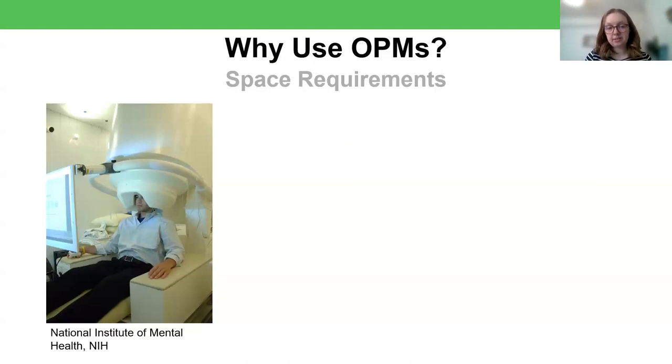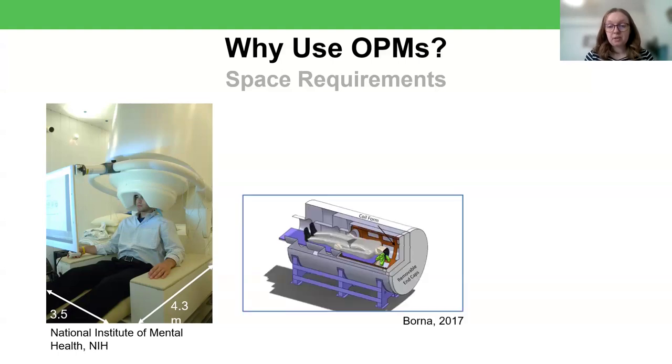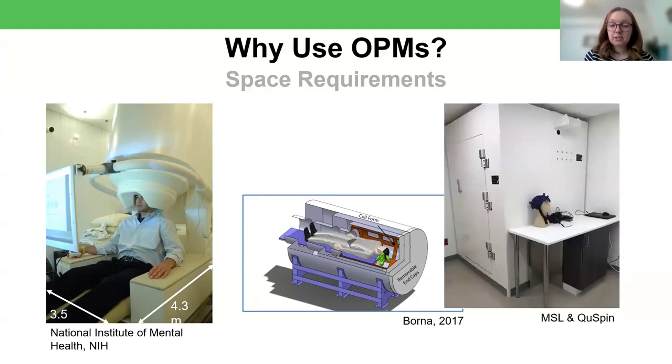Additionally, you might choose to use OPMs because of space requirements. So this helium dewar takes up quite a lot of room. A cryogenic MEG room can be just over three meters by four meters in footprint. Alternatively though, because the OPMs are very small and can be placed on the head, you can imagine a system that looks more like an MRI scanner that a person lies down in and takes up much less room. Alternatively, you can build a similar looking magnetically shielded room to a cryogenic system, but one that's much smaller in space. So this one takes up only 1.3 by 1.3 meters.